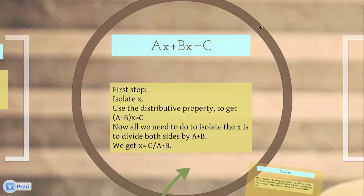Now all we need to do to isolate the x is to divide both sides by a plus b. We get x equals c over a plus b.